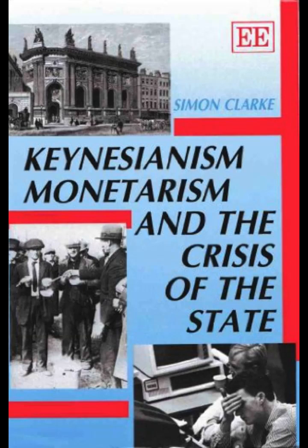Unemployment benefit was intended, in association with the network of labor exchanges, to facilitate the restructuring of capital by lubricating the labor market, not to provide a guaranteed right to subsistence. Thus, the National Assistance Board could provide for those unable to earn a minimum subsistence through wage labor, insurance contributions, or female dependents, while a modified workhouse test continued to be applied to the able-bodied poor in the form of a means test and a judgment of willingness to work.